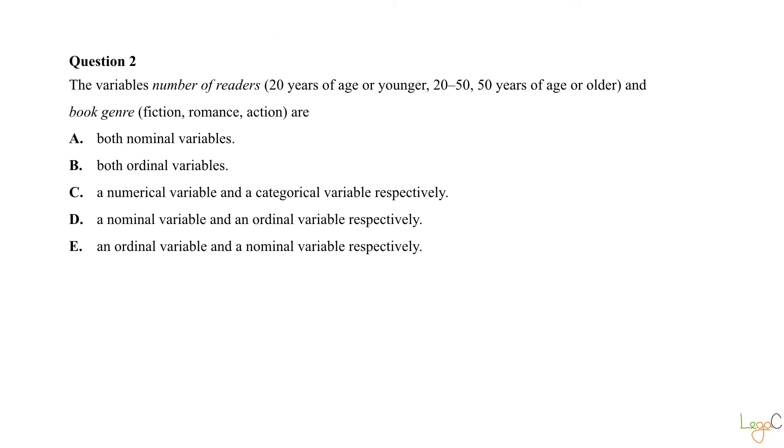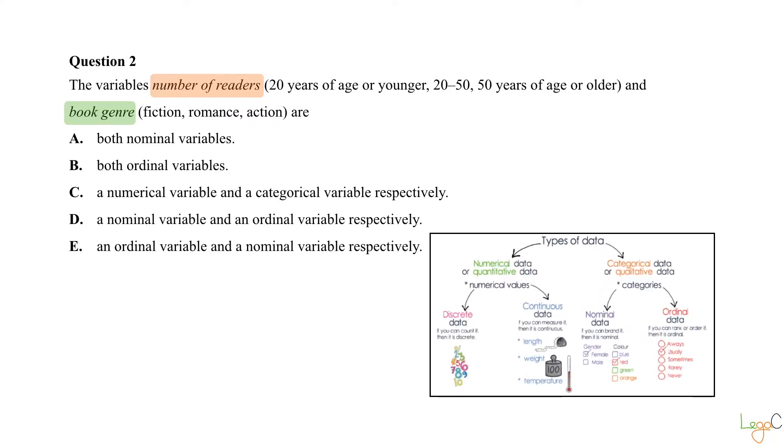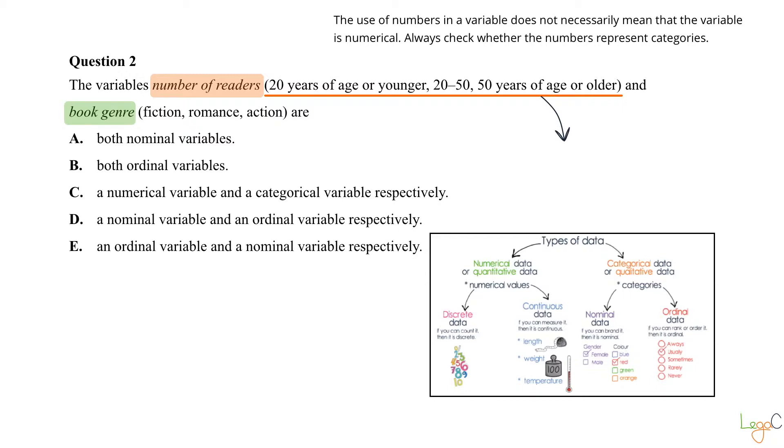In this question, the two variables are number of readers and book genre, and again the question is asking to state the type of variables they are. The number of readers is defined by three categories: less than 20, 20 to 50, and 50 years of age or older. The use of numbers in a variable does not necessarily mean that the variable is numerical. Always check whether the numbers represent categories or not.